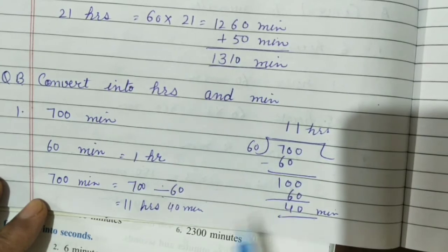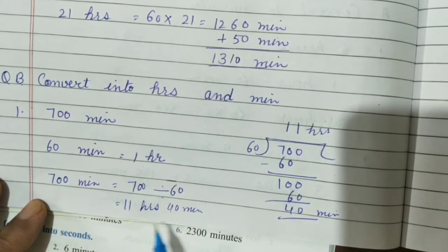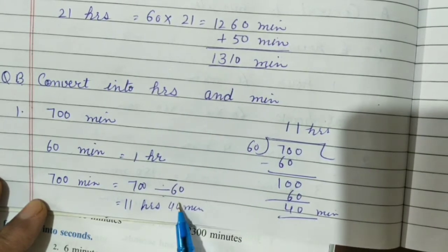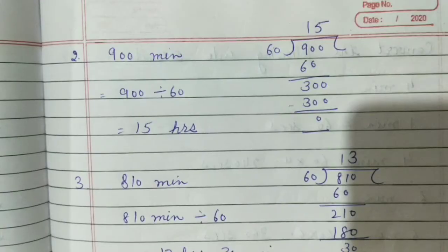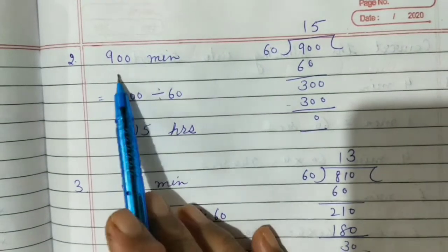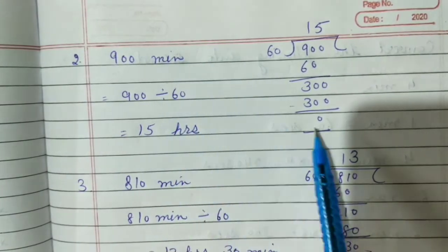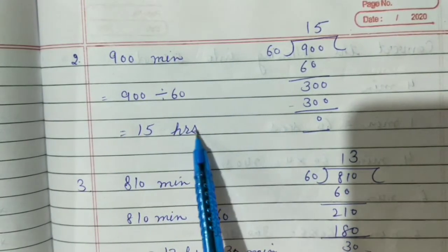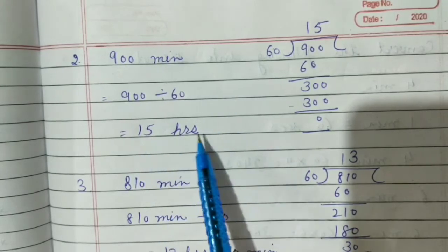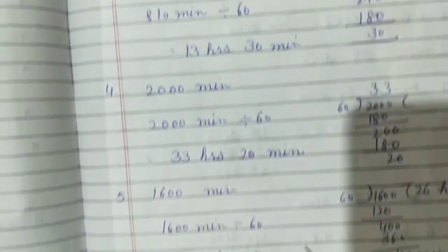If remainder is 0, no need to write 0 minutes here. If there is a remainder, then write minutes, otherwise leave it. Now question number 2 is 900 minutes. Again you will divide by 60. Here remainder is 0, so no need to write 0 minutes. So answer is 15 hours. Same way you can do all questions.